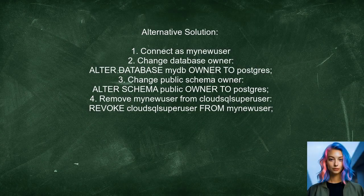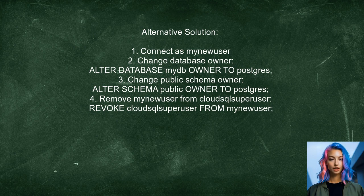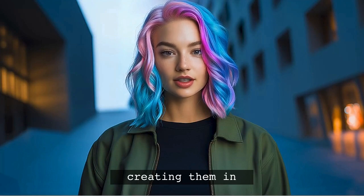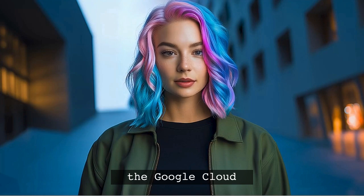Another user suggests a straightforward approach to change the owner of the public schema. First, connect to your database as the owner user. Then, change the database owner using the command: ALTER DATABASE mydb OWNER TO postgres. After that, change the public schema owner with: ALTER SCHEMA public OWNER TO postgres. Lastly, to remove the new user from the Cloud SQL super user group, use: REVOKE cloudsqlsuperuser FROM mynewuser. Quick tip: always plan your schema and user roles before creating them in the Google Cloud Console — this can save you a lot of headaches down the line.